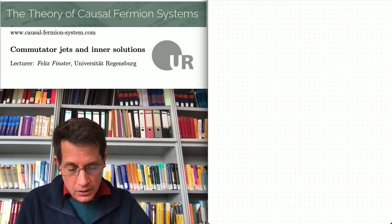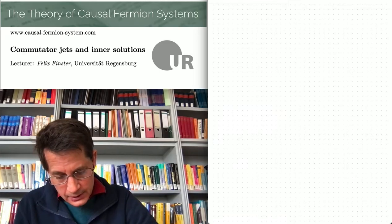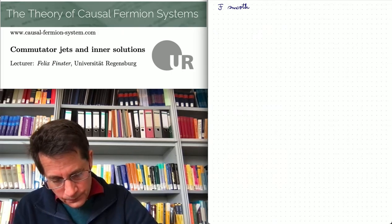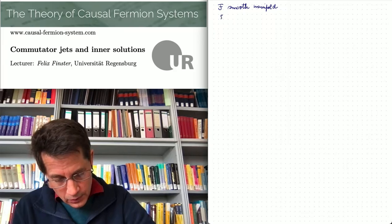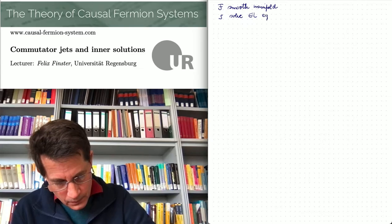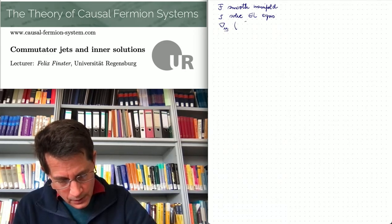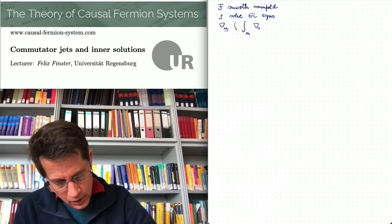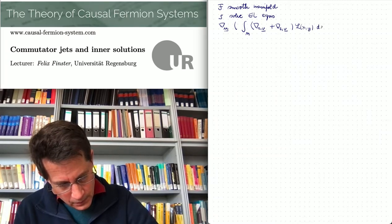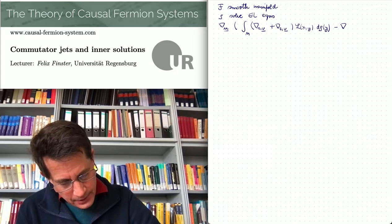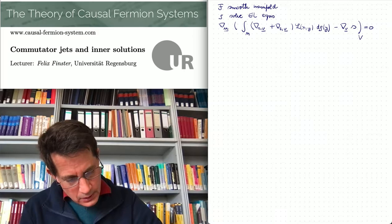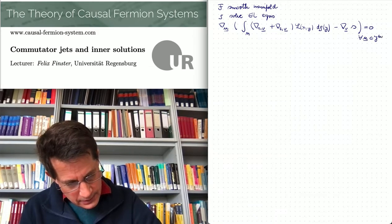The setting we consider here is again that of causal variational principles. So curly F is again a smooth manifold. We assume that rho is a solution of the Euler-Lagrange equation. The linearized field equations look as follows: nabla_u integral over M of (nabla_1 v + nabla_2 v) acting on the Lagrangian of (x, y) minus nabla_v s equals zero, and this should hold for all test jets u in a certain test space J_test.